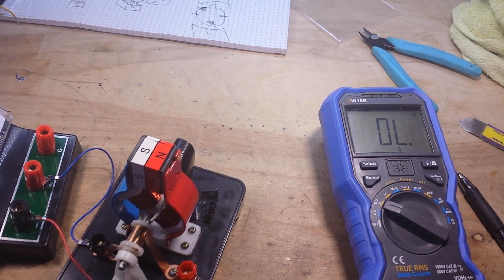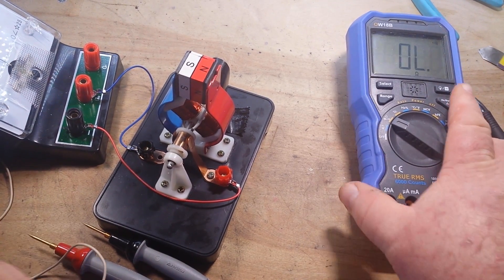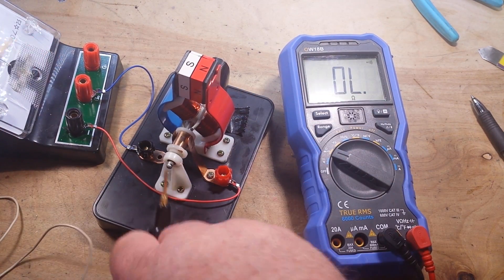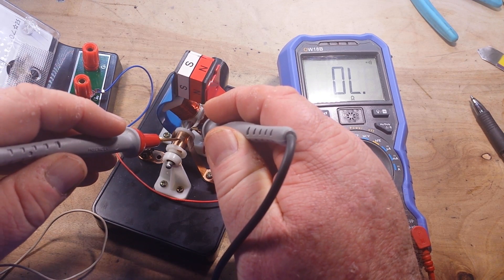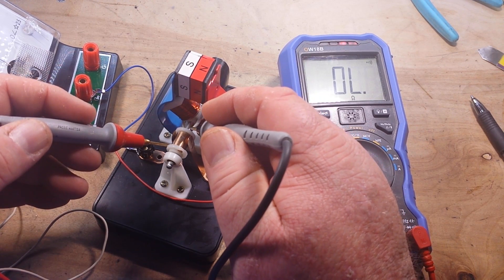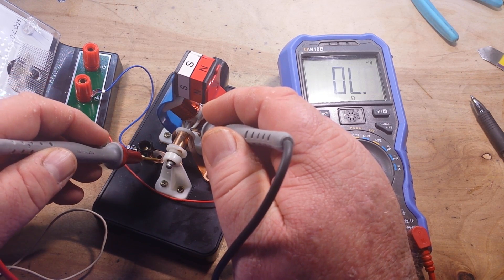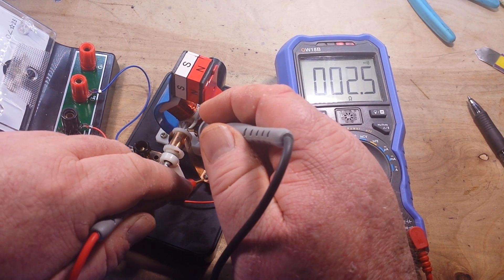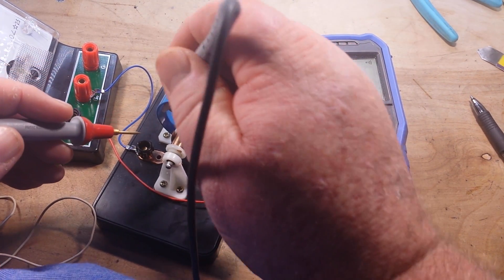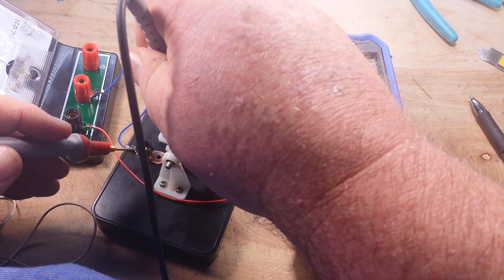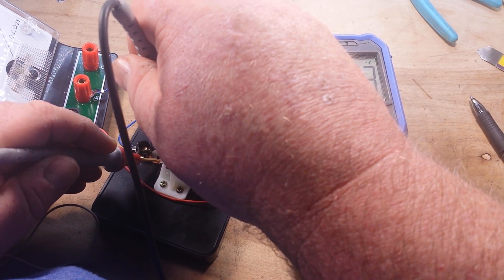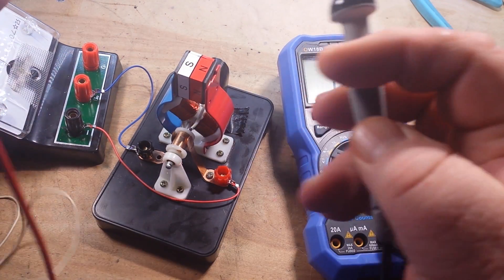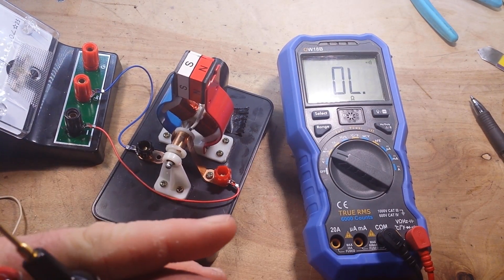Now we got that duct taped in place, so now we should have continuity here but no continuity here. I'm sorry, down here. There, you see that? But over here we should have continuity. Good. And then when we come over here and we touch this wire, we get continuity here. And there. Ay caramba!